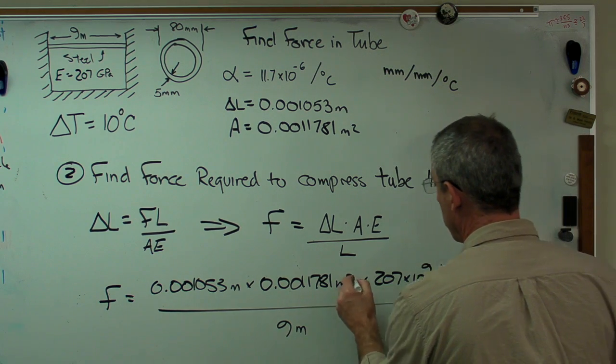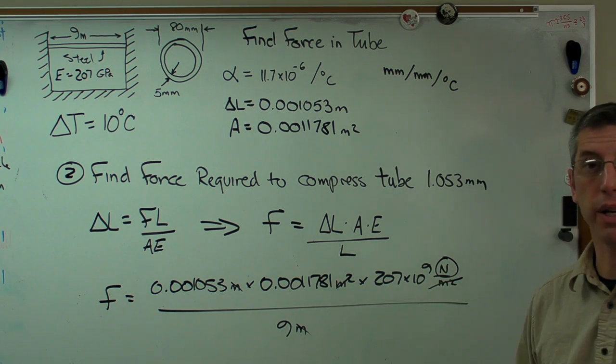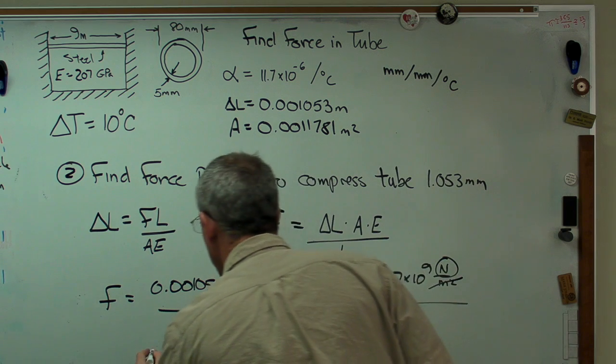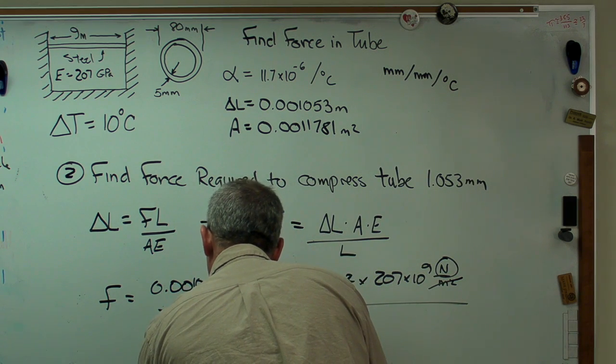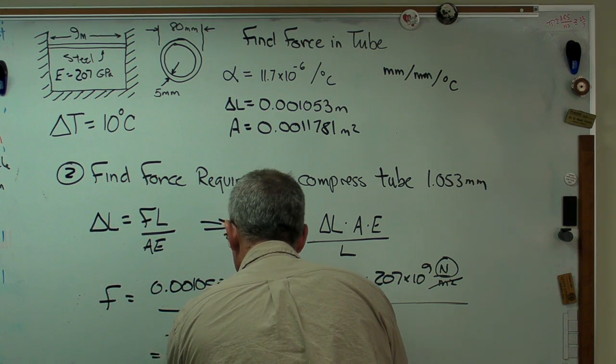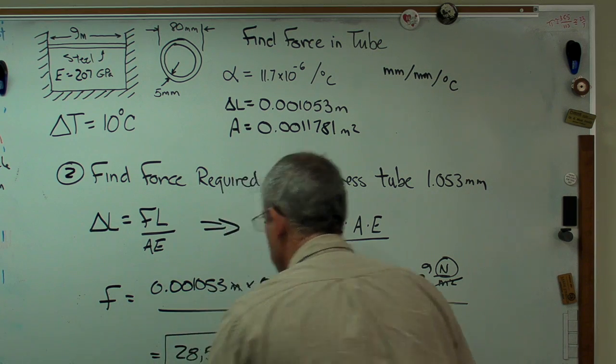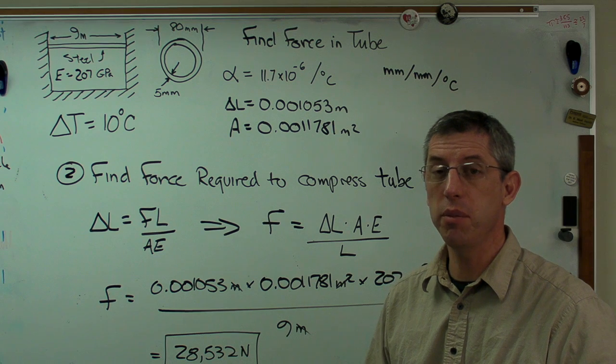So meters squared and meters squared there cancel out. Meters and meters cancel out. And I'm left with newtons. Perfect. I want the answer to be in newtons. And I get 28,532 newtons. 28,532 newtons. Surprisingly big number.